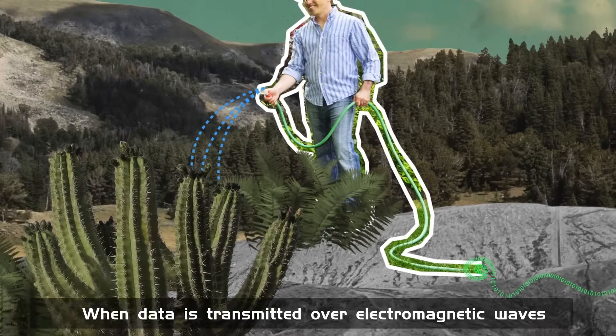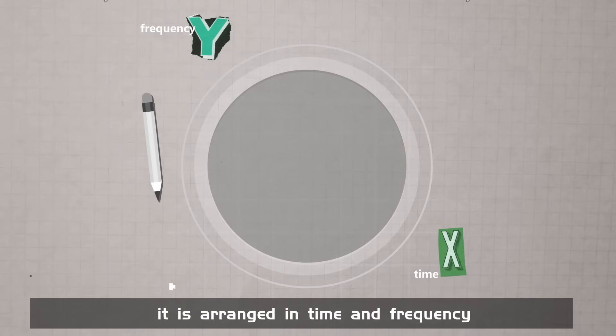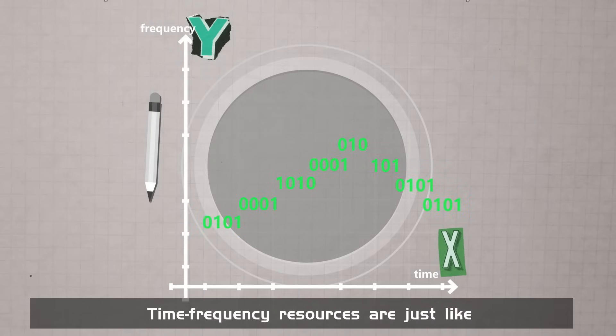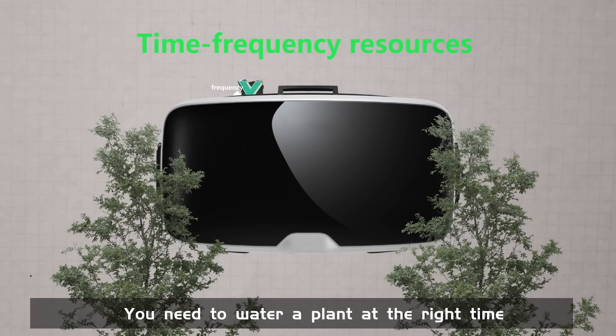When data is transmitted over electromagnetic waves, it is arranged in time and frequency. Time-frequency resources are just like the act of watering plants. You need to water a plant at the right time.